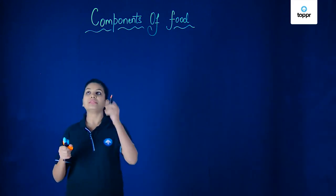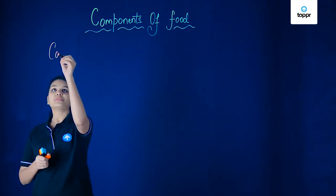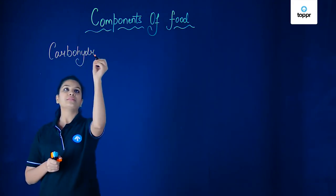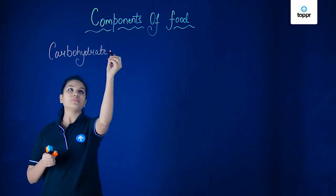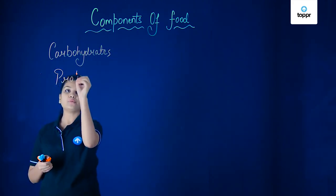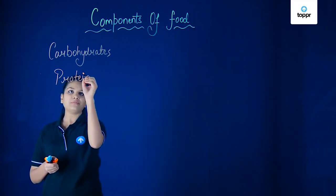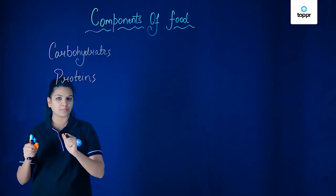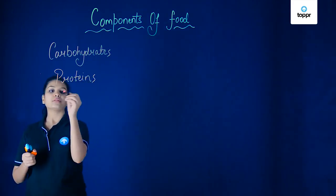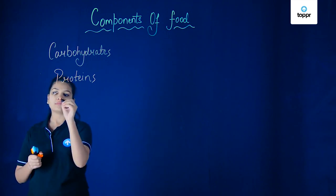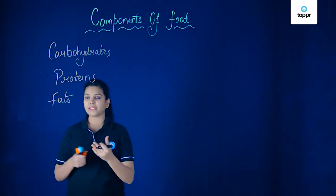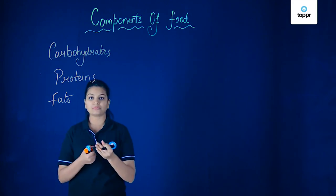For example, these are carbs, or we can call them carbohydrates. Carbohydrates we mainly get from cereals. Similarly, we have proteins in our food. These proteins are very important for our growth and development and you mostly get them from dal, chicken, etc. Next are fats. Fats also provide us energy and you can find them in items like butter, cheese, etc.